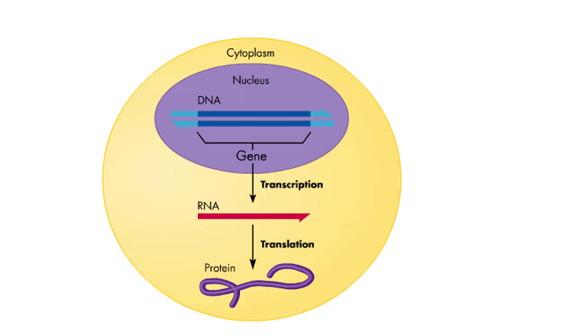For example, to make the anti-clotting AT3 protein, cells first transcribe the AT3 gene into AT3 RNA.